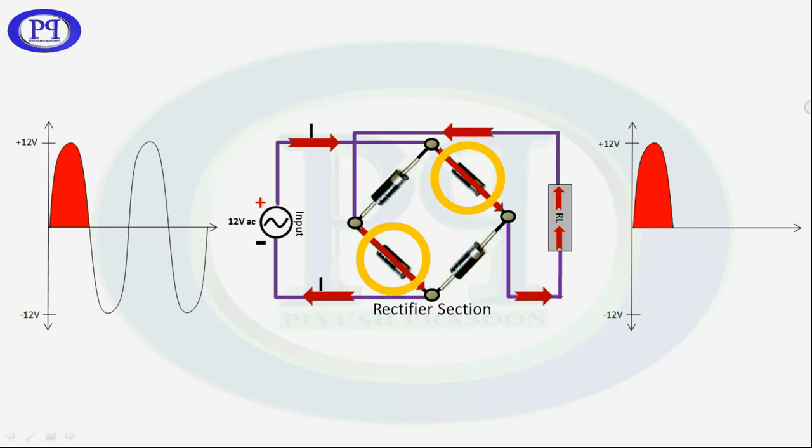Here I want you to notice the two diodes which are being used during the positive half cycle, and also notice the flow of current in load resistance RL which is flowing from bottom to top. Hence we are getting positive half signal as an output.